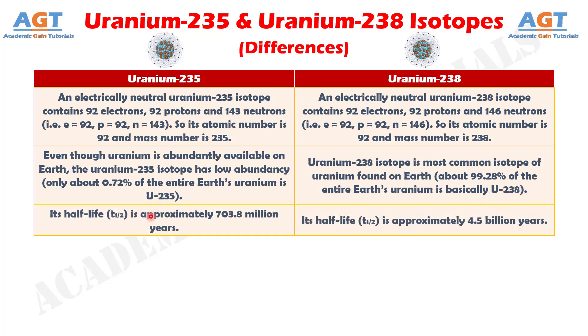Number 3. The half-life of Uranium-235 is approximately 703.8 million years, whereas the half-life of Uranium-238 is approximately 4.5 billion years.